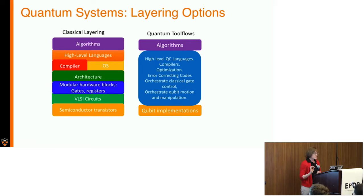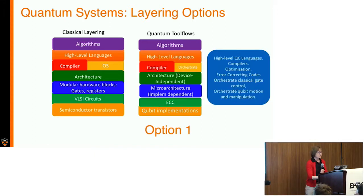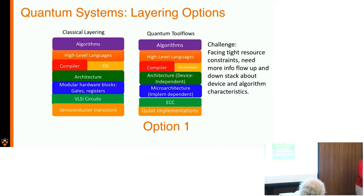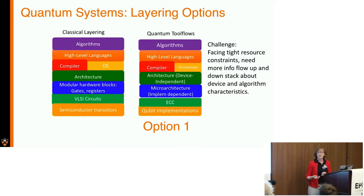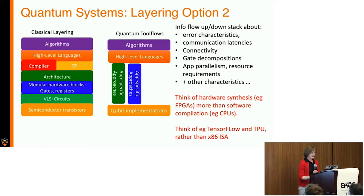Looking at layering options: it's tempting to put on our architecture hats and come up with a clean layered diagram—device independent, device dependent, and so forth—and stick with it. That might eventually be where we end up, but right now we face very tight resource constraints, and there's a need for a lot of information flow up and down the stack that makes sharp abstractions maybe not ready for prime time yet. There are other layering options too, and I'll give some examples of the challenges if I have time.